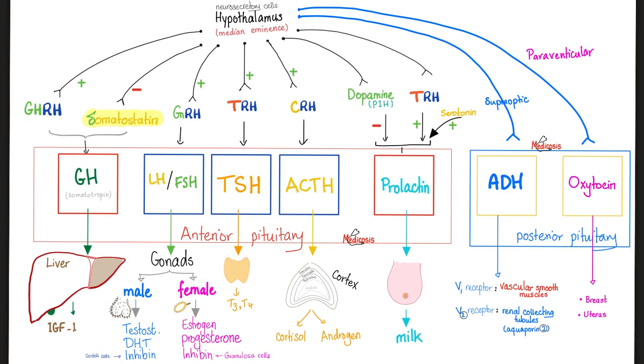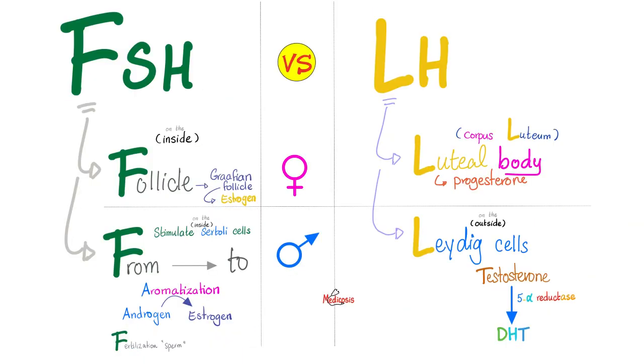What does the female ovary secrete? Estrogen, progesterone, and inhibin — for the negative feedback. Estrogen is made by the ovary. Which part of the ovary? The follicles of the ovary.